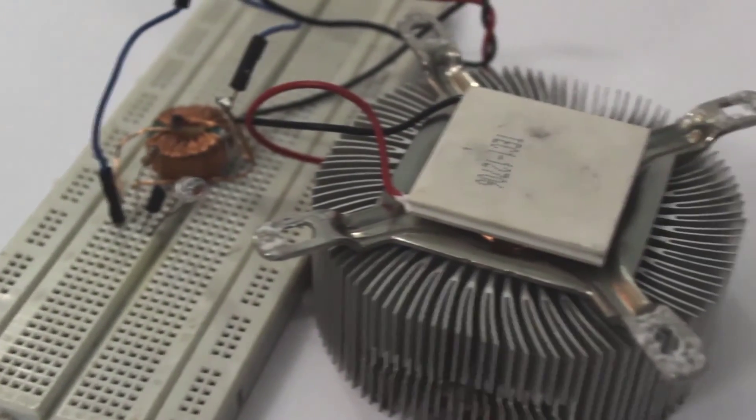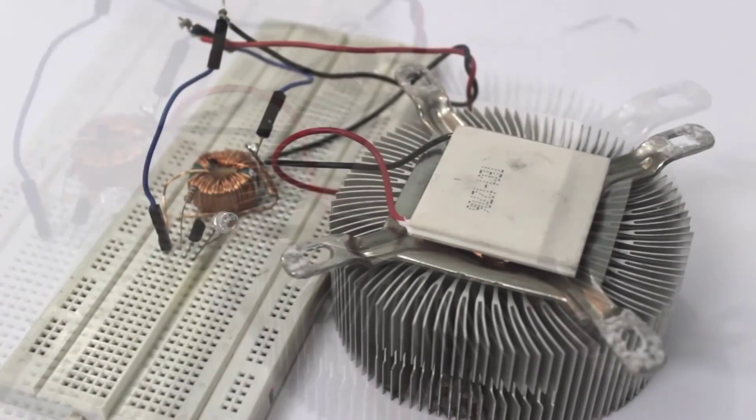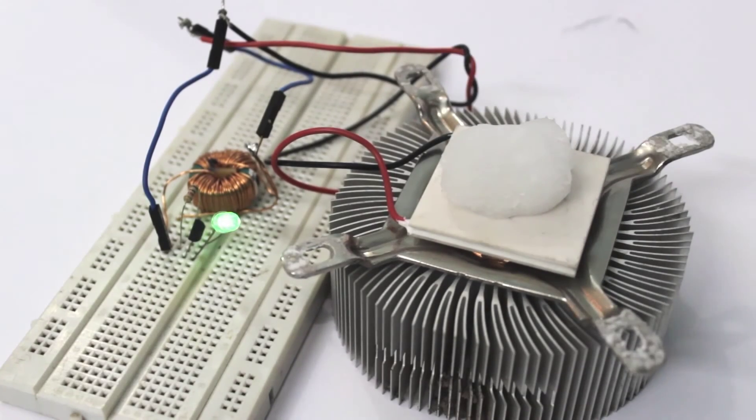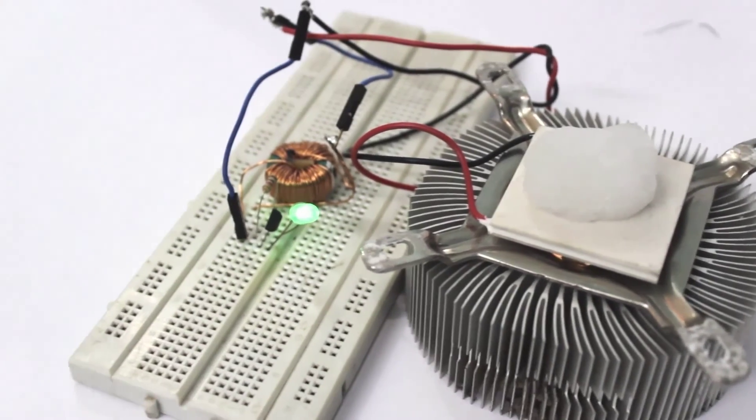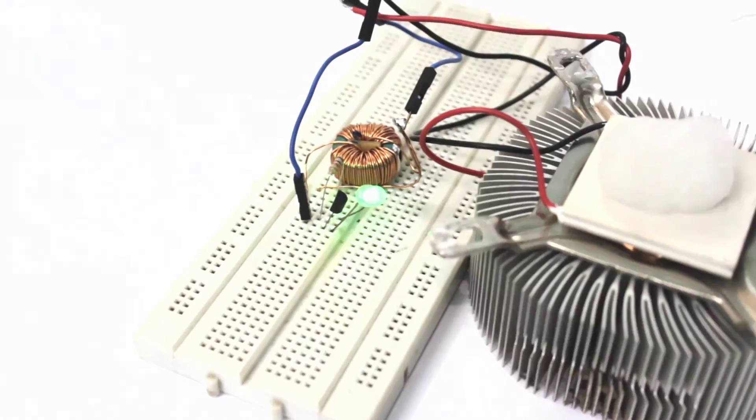I then connected the circuit to the Peltier module with the hot side connected to a heat sink and the cold side with an ice cube. As you can see, the LED starts working.